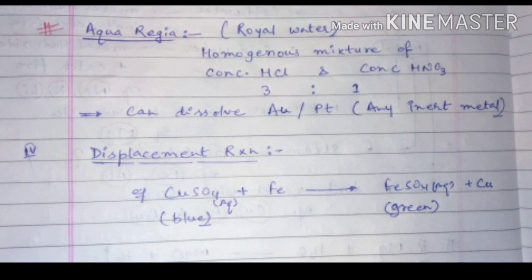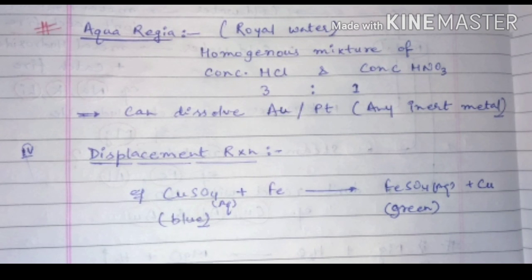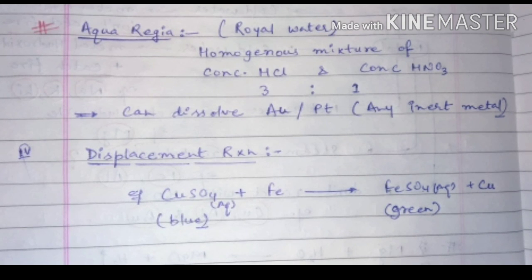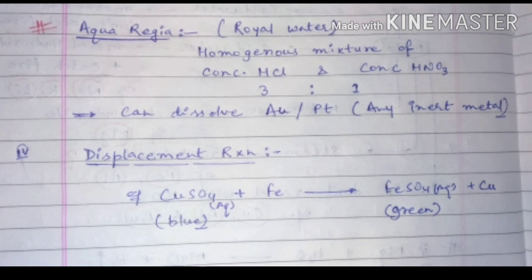Aqua regia, also known as royal water, is a homogeneous mixture of concentrated HCl and concentrated nitric acid in a 3:1 ratio. This mixture can dissolve noble metals like gold and platinum. The last property of metals is the displacement reaction.